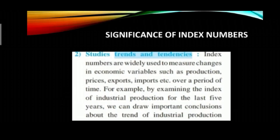Second point: studying trends and tendencies. Trends in production — whether increasing or decreasing — what is happening with prices, whether they are hiking or reducing, and what is happening in exports and imports over the years. To study all of this, we need the help of index numbers. Index numbers are widely used to measure changes in economic variables such as production, prices, exports, and imports over a period of time. For example, by examining the index of industrial production for the last five years, we can draw important conclusions about the trend of industrial production — how much increase we achieved in production over those years.